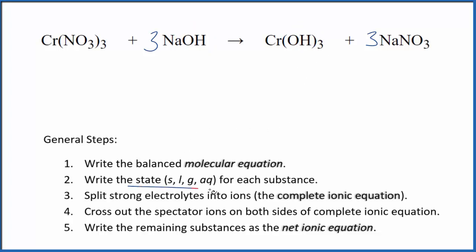Now we need to write the state for each substance. That looks like this. Nitrates are very soluble, so those substances are aqueous. Sodium hydroxide is a strong base, so that'll be aqueous. But in general, hydroxides are insoluble. Chromium 3 hydroxide here is insoluble. We say it's a solid, and that means it's a precipitate. It's going to fall to the bottom of the test tube as a precipitate. So that's the reaction.